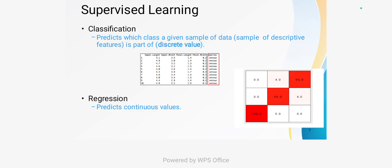Regression predicts the output in terms of a continuously changing value, based on the relationship between variables in the dataset. Commonly used regression algorithms include linear regression, regression tree algorithm, nonlinear regression, logistic regression, Bayesian linear regression, polynomial regression, and smaller regression algorithms.